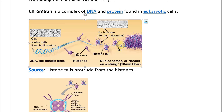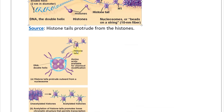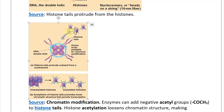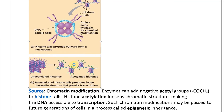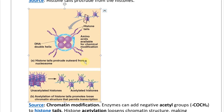There is also an H1 protein type of histone. When spooled all together you get a huge bundle — the nucleosome structure, or beads on a string, forming a 10-nanometer fiber. Histone tails protrude outward from a nucleosome. You have the DNA double helix looped around it, and then amino acids available for chemical modification on the histone tails.